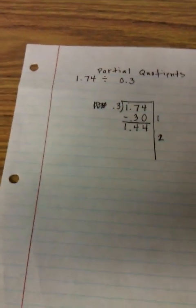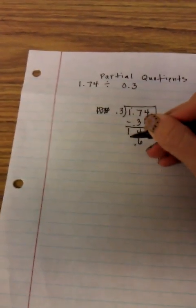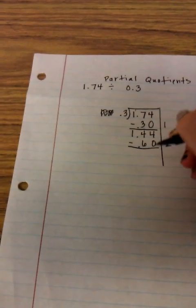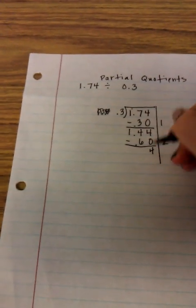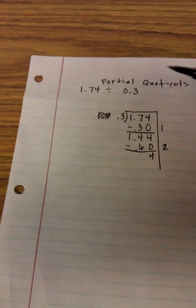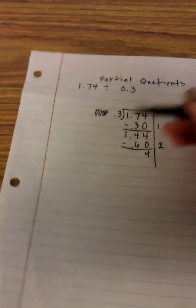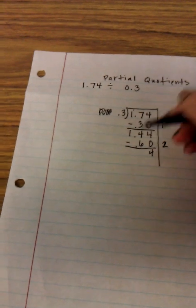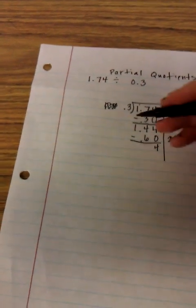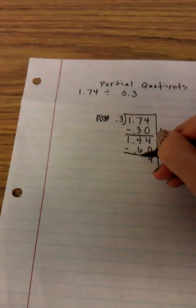So 3 tenths 2 times is 6 tenths. Subtract. 4 hundredths minus 0 is 4 hundredths. Now here I can do the crossing out and the regrouping, but I'm thinking math, and I know that this would just end up being 14 tenths minus 6 tenths, which would give me 8.